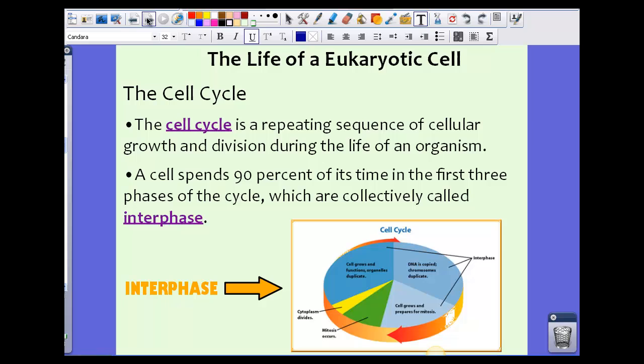The cell basically spends about 90% of its time in the first three phases of the cycle, which are collectively called interphase.